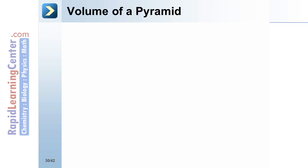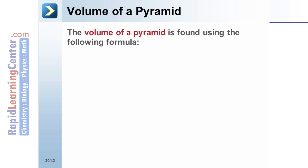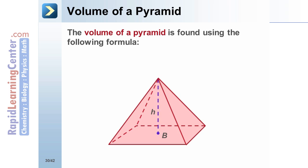The volume of a pyramid. The volume of a pyramid is found using the following formula: V equals one-third times B times H, where B is the area of the base and H is the height of the pyramid.